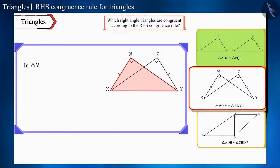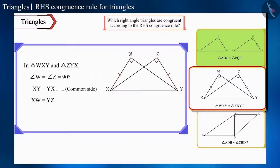In the second pair, in triangle WXY and triangle ZYX, angle W and angle Z are right angles. So these two triangles are congruent by the RHS congruence rule.